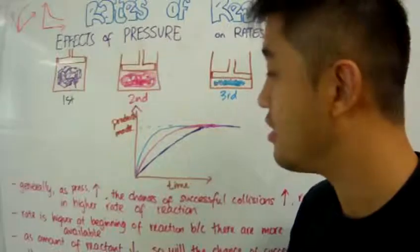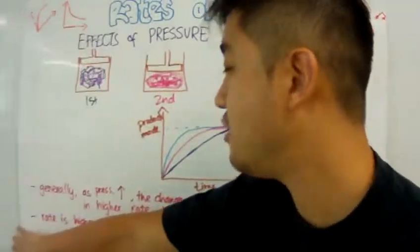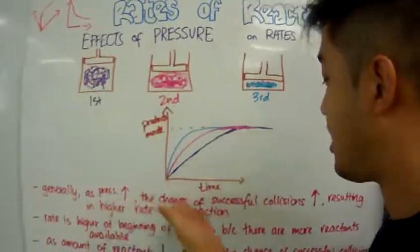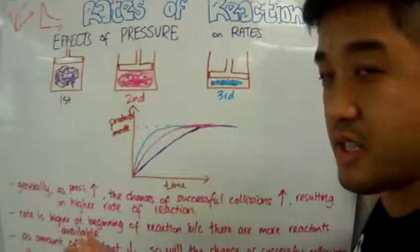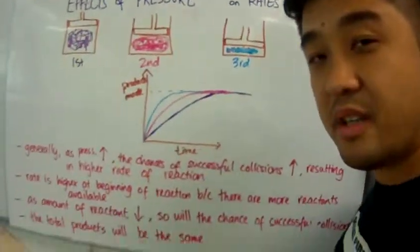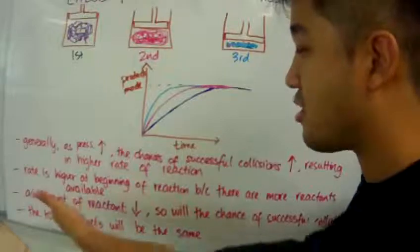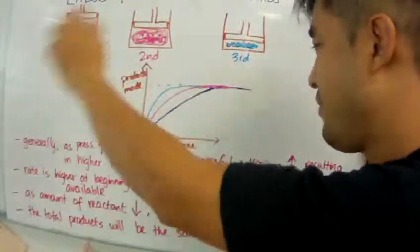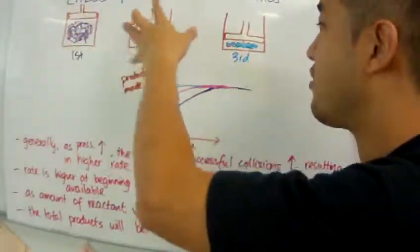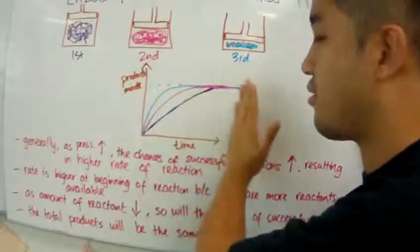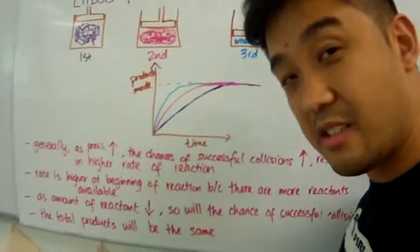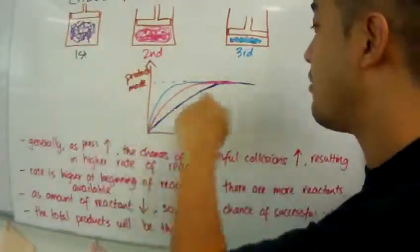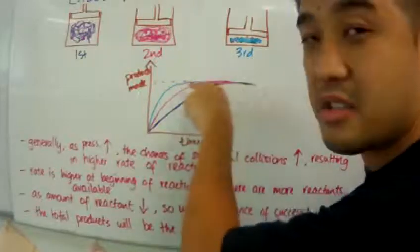Simple explanation again, using pressure and effects of reaction. And so, generally, when we speak, it's the same thing. When you increase the pressure, the chances of successful collisions increases, resulting in a higher rate of reaction, a higher initial rate of reaction. The rate at the beginning of the reaction is high because there's more reactants in there, and as the amount of reactants decrease during the course of the reaction, so will the chances of successful collisions. But again, the total amount of products will always remain the same.